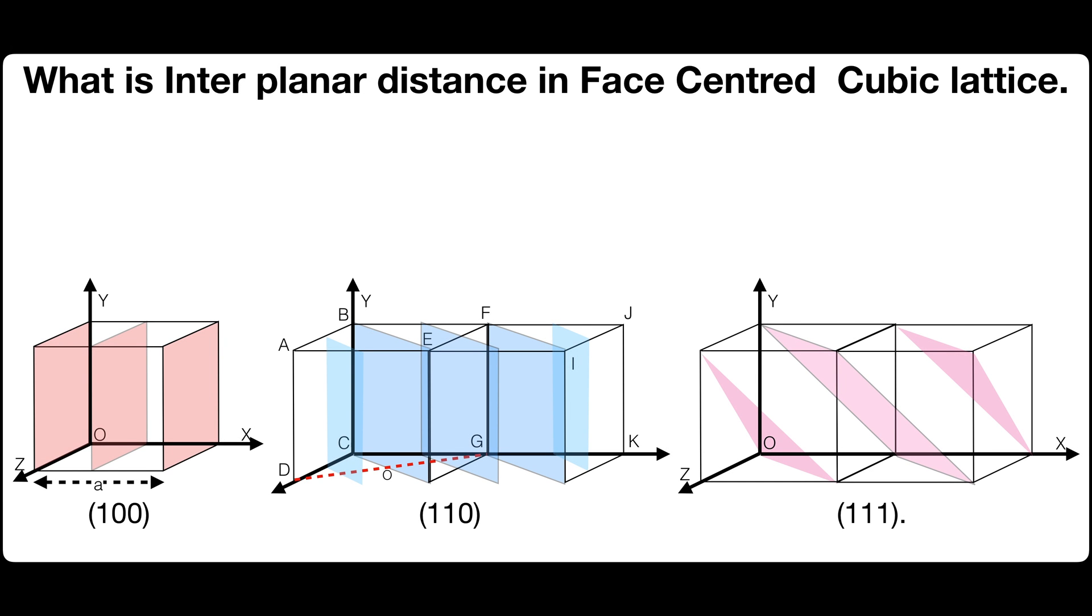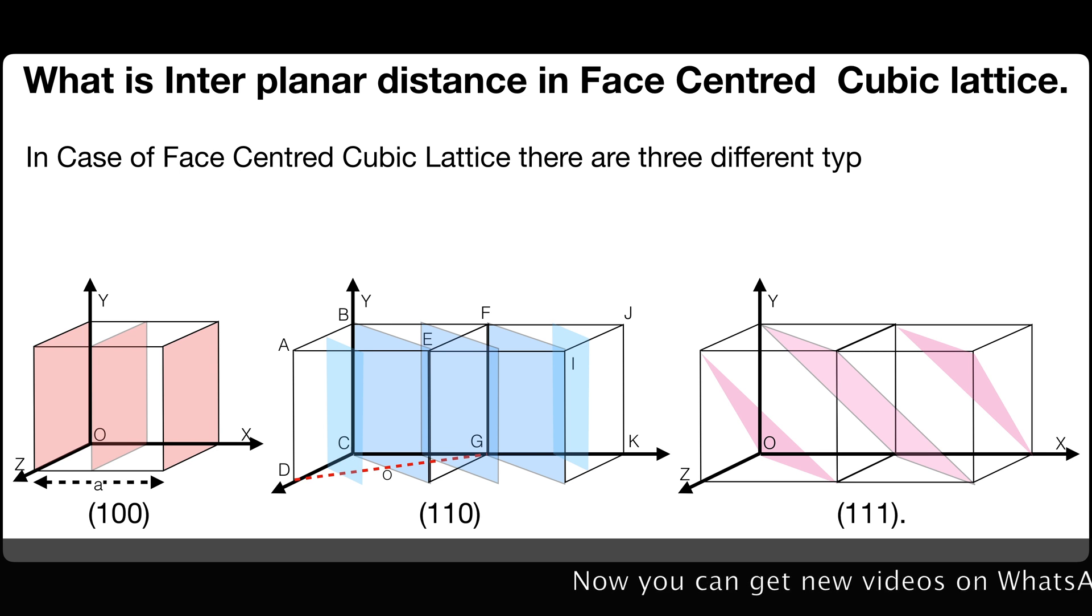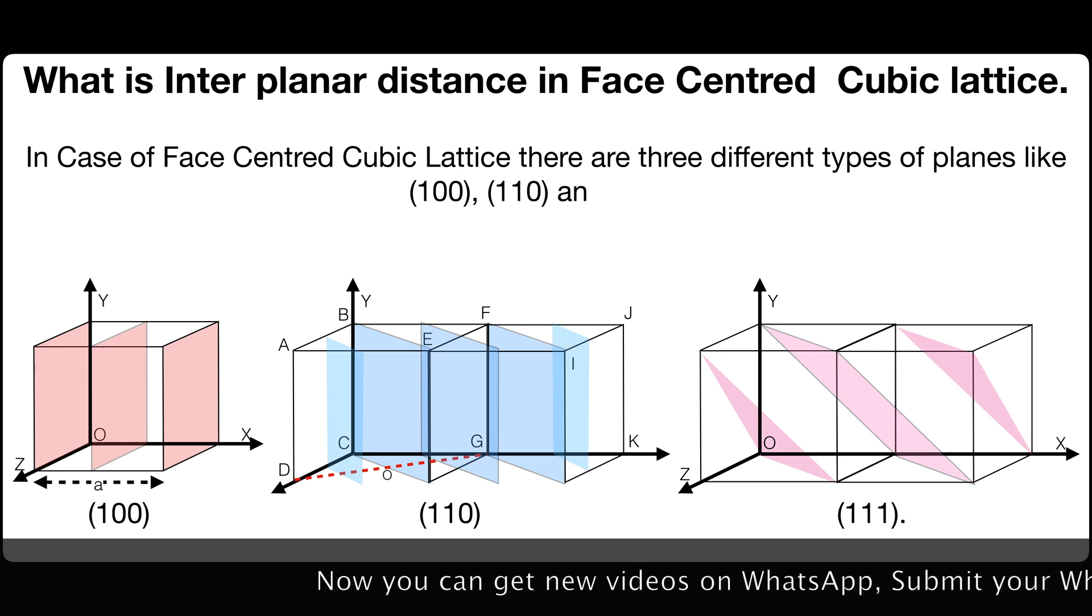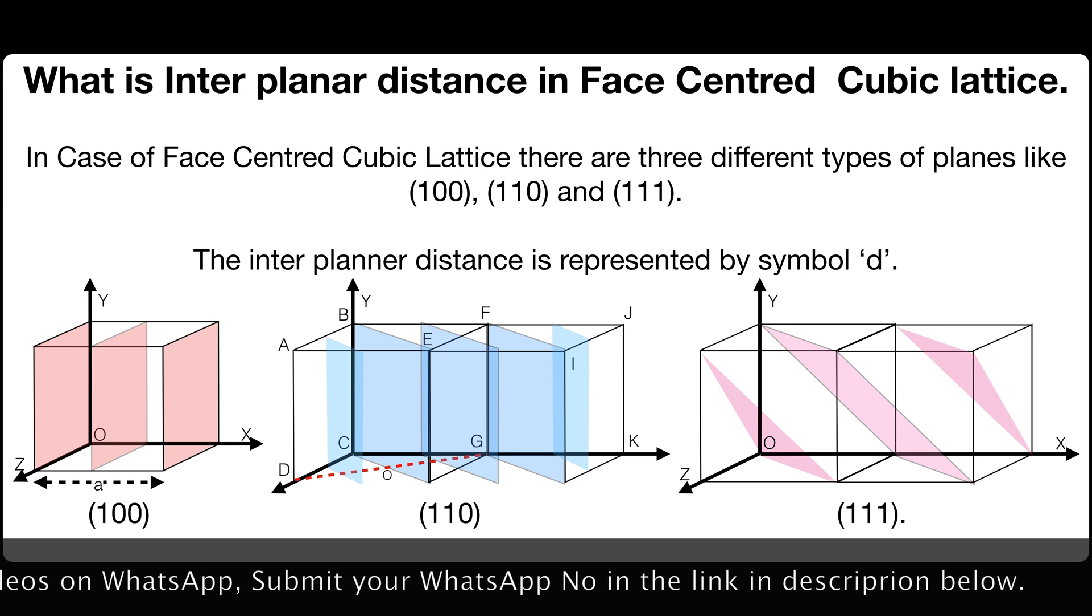What is interplanar distance in face centered cubic lattice? In case of face centered cubic lattice there are three different types of planes: 100, 110, and 111. The interplanar distance is represented by symbol d.